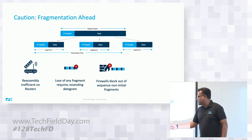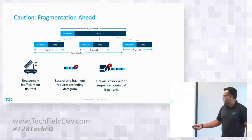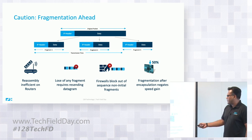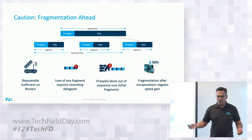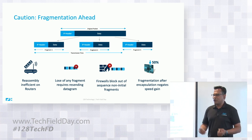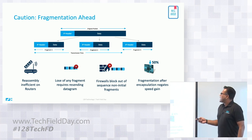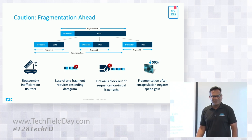If you receive things out of sequence — for example, if you receive packet number two first and you have a firewall in the middle — it's going to drop your packet because it hasn't seen fragment number one. So any time there is jitter and you receive things out of sequence, you'll have to resend the entire thing again. Fragmentation after encapsulation also negates any speed gain from hardware forwarding. These are documented in RFC 4459, which actually states all of these as problems from tunnels.